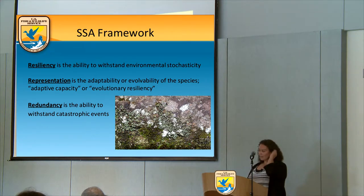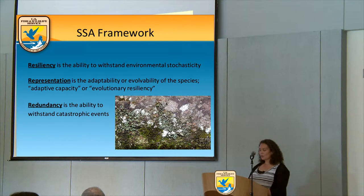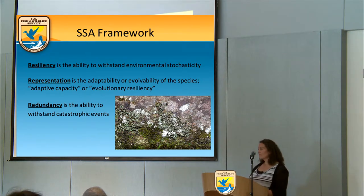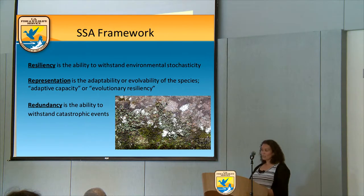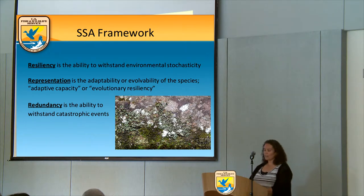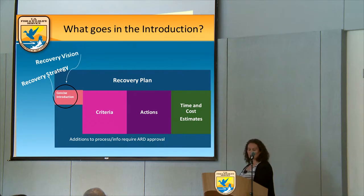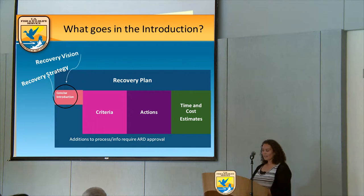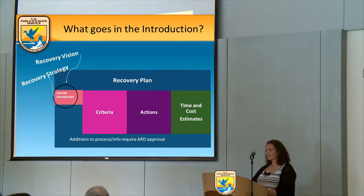Resiliency is the ability to withstand environmental stochasticity — how well a species tolerates natural annual variation, whether hot, cold, wet, or dry years, and how it recovers from periodic disturbances such as floods. Representation is the adaptability of a species — its adaptive capacity or evolutionary resiliency — how well it adapts to larger changes such as climate change, habitat change, or biological diseases. Redundancy is the ability to withstand catastrophic events, meaning not all populations are exposed to the same catastrophic events. The recovery plan will have a concise introduction including the recovery vision or strategy and summarizes the underlying rationale for the criteria.